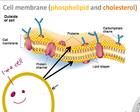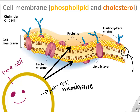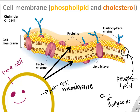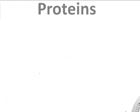Our cell membrane — the barrier of the cell — is made of tiny phospholipids, which are basically a phosphate with a couple of little fatty acids. These phospholipids arrange into our cell membrane and create the barrier between the inside and outside of our cells.